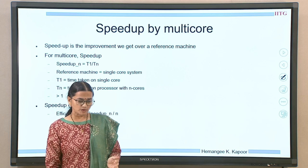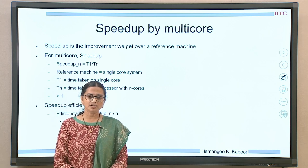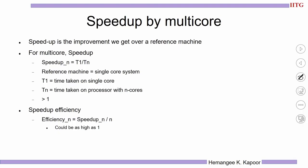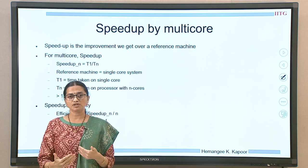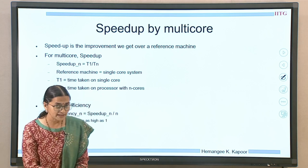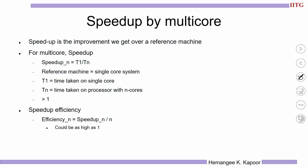In the previous lecture we have seen speedup — speedup was how does a machine perform with respect to a reference machine, what improvement did we get. Now if I want to talk about speedup of a multi-core, the reference machine is a single core machine. When I replace a single core machine with a multi-core machine, how much speedup do we get? The slide shows that the speedup on this machine is T1 by Tn, where T1 is the execution time on a single core system divided by the time taken on a machine having n cores, Tn.